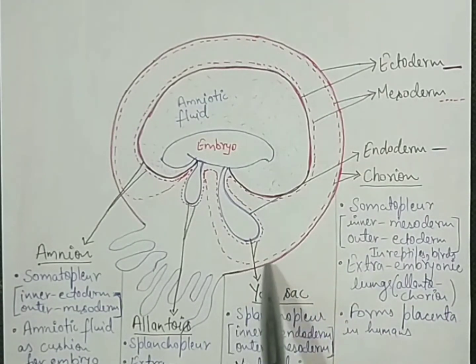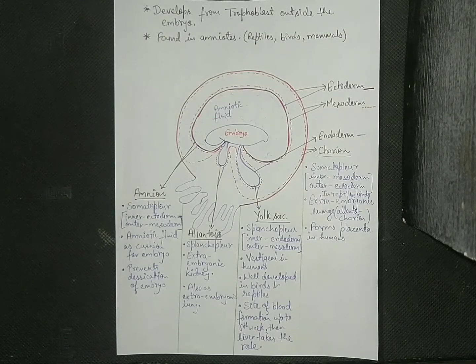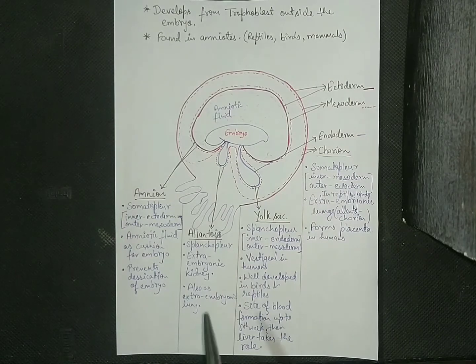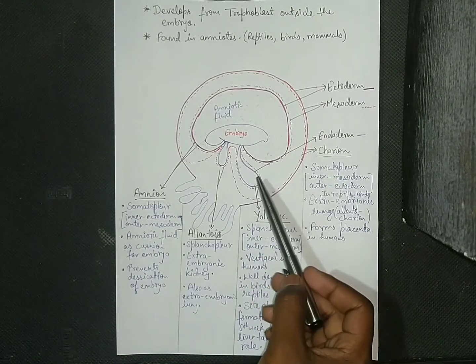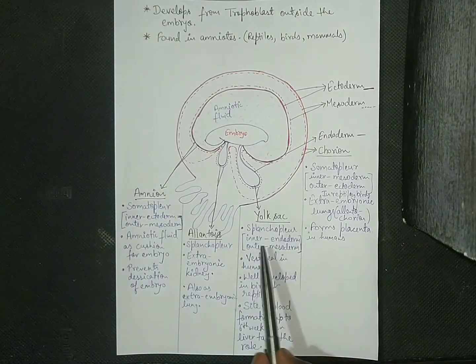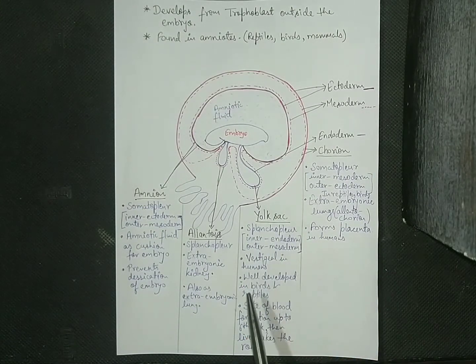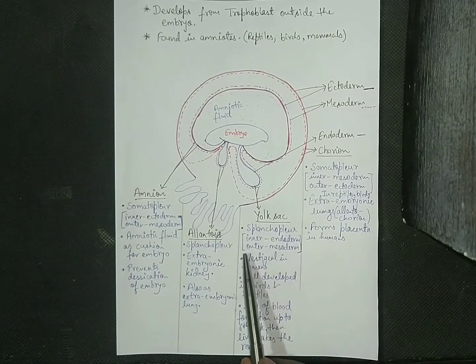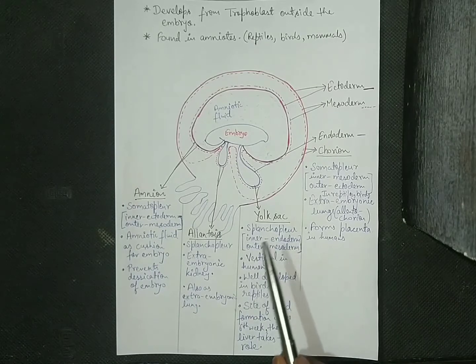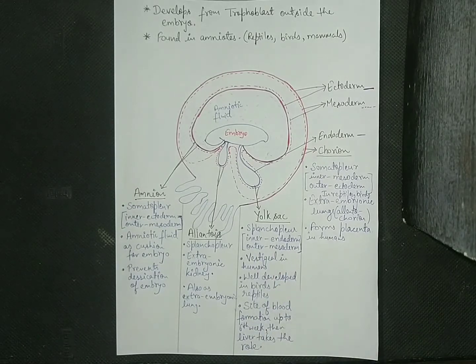The next extra embryonic membrane is yolk sac, and it is formed below the embryo. It is formed of splanchnopleur membrane, that is the inner membrane is endoderm and the outer membrane is mesoderm. It is vestigial in humans but well developed in birds and reptiles.